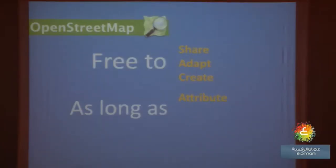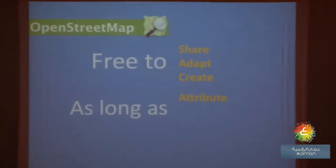The third and last freedom is freedom to create, meaning you can create your own database based on OpenStreetMap. For example, you can create a database of all the schools in Oman based on what's already mapped in OpenStreetMap. The only limitation is that you must attribute — you mention that the school database used in your application came from OpenStreetMap. When Apple Maps initially launched, they did not give credit to OpenStreetMap, even though OpenStreetMap was one of their data sources. We asked them to give proper attribution, which they did — and now in their credit section they acknowledge OpenStreetMap as a source.